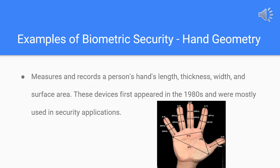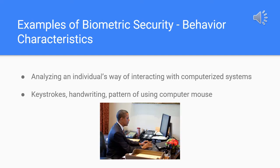The fifth method is hand geometry, which measures and records the length, thickness, width, and surface area of a person's hand. These devices date back all the way to the 1980s and were typically used in security applications.